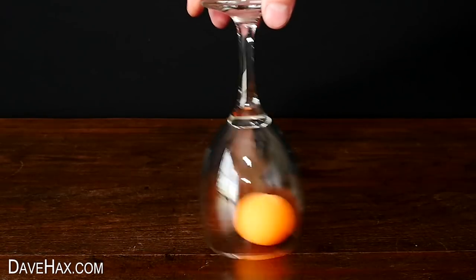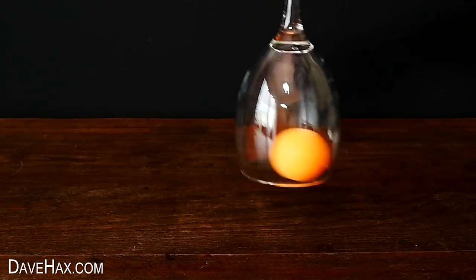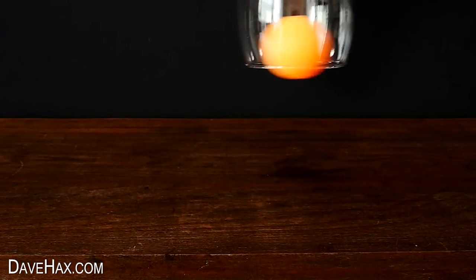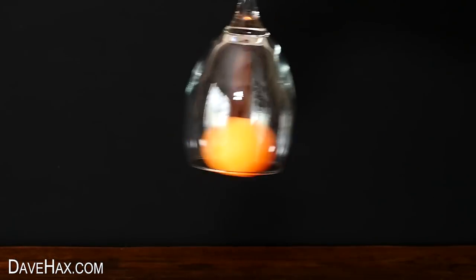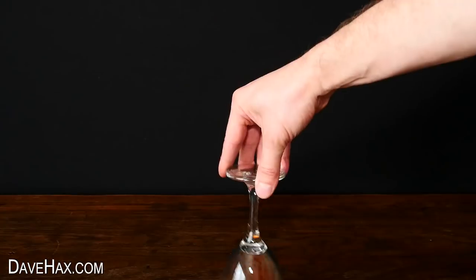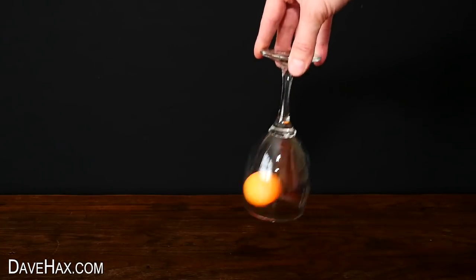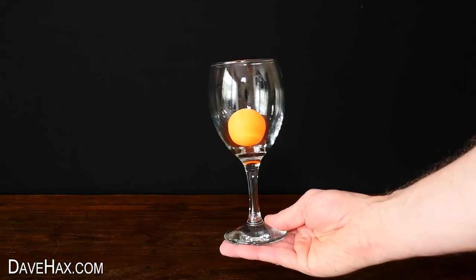Spinning the ball inside the glass causes it to push against the wall with centrifugal force, allowing us to pick it up off the table. And if you're quick enough, you can turn the glass over and catch the ball. Pretty cool, huh?